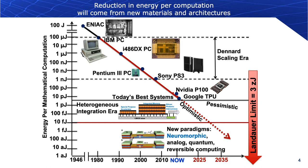We can see through trends over time that reduction in energy per computation going forward is really going to have to come from new materials and new architectures. These include neuromorphic computing, analog computing, quantum computing, reversible computing, and new materials such as low-dimensional and magnetic materials. It is the combination of new materials and how we use them in computing that can lead to innovation in decreasing energy per mathematical computation.